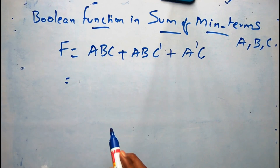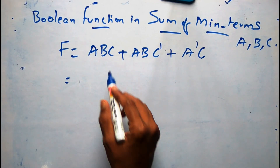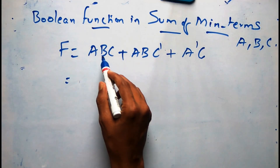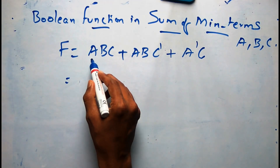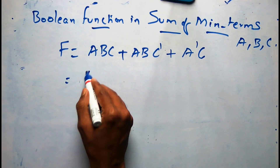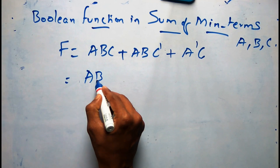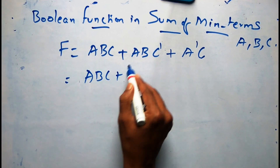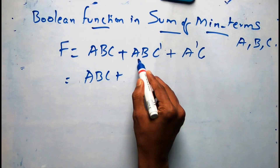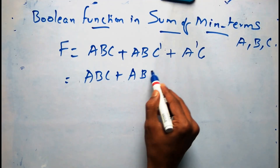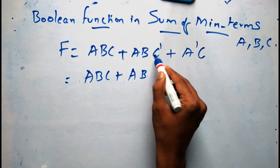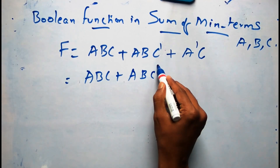Each term should have all the variables. If you see the first term, it is having three variables, so you can copy it as it is. The second term is also having three variables, either in normal form or complement form.